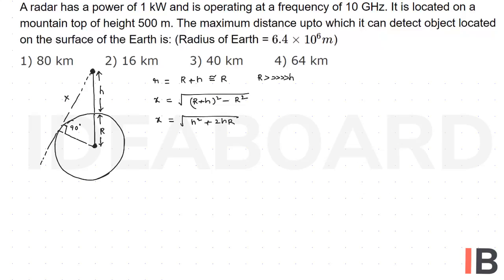Then after substituting, x square is equal to H value 500 meters, that is 500 whole square plus 2 into 500 into radius of the earth 6.4 × 10^6.